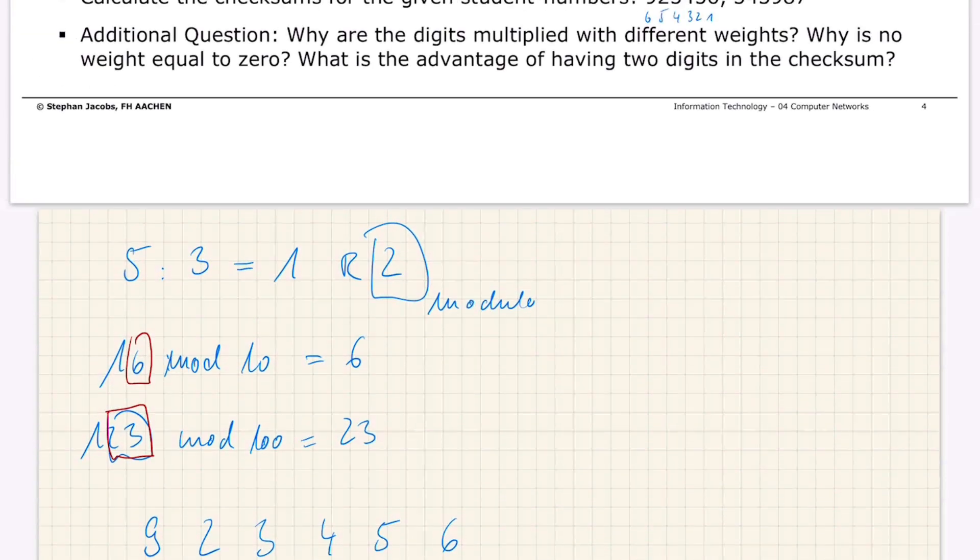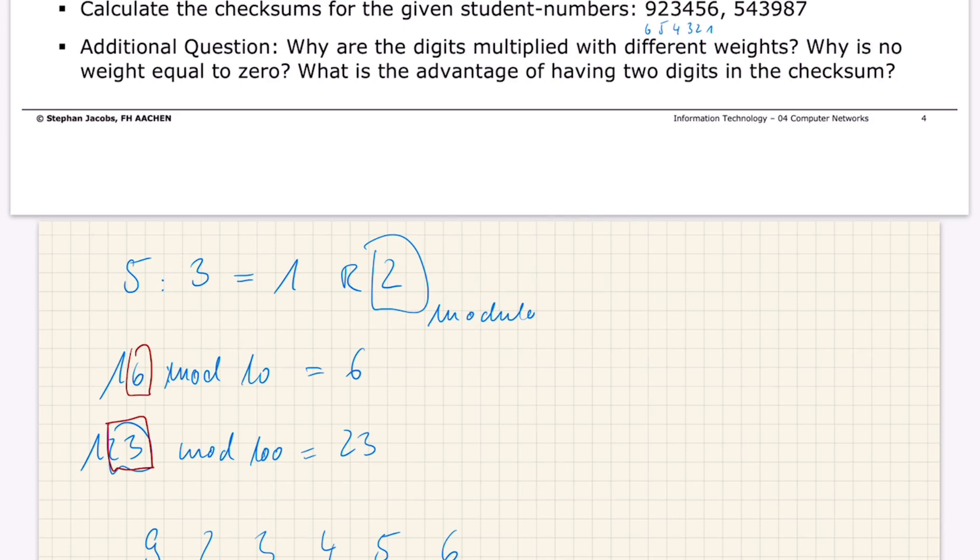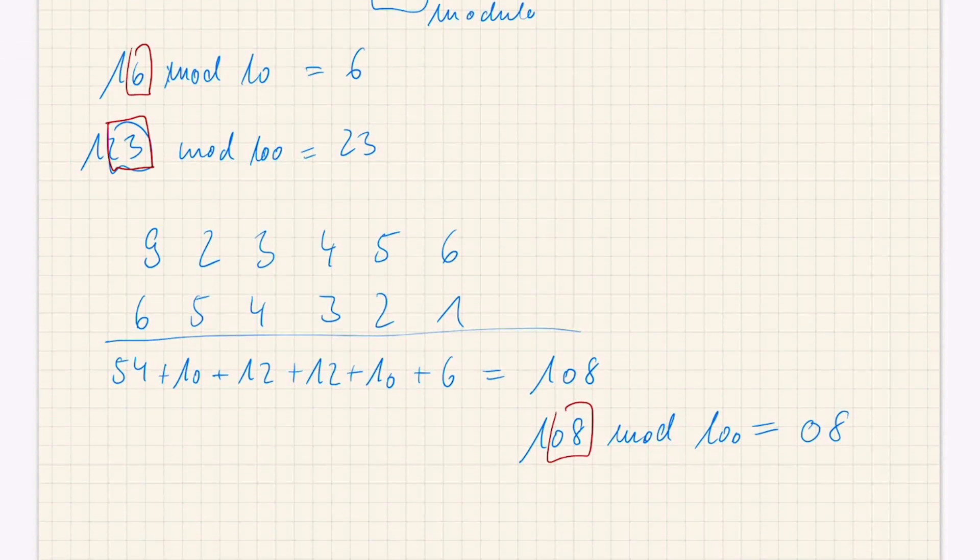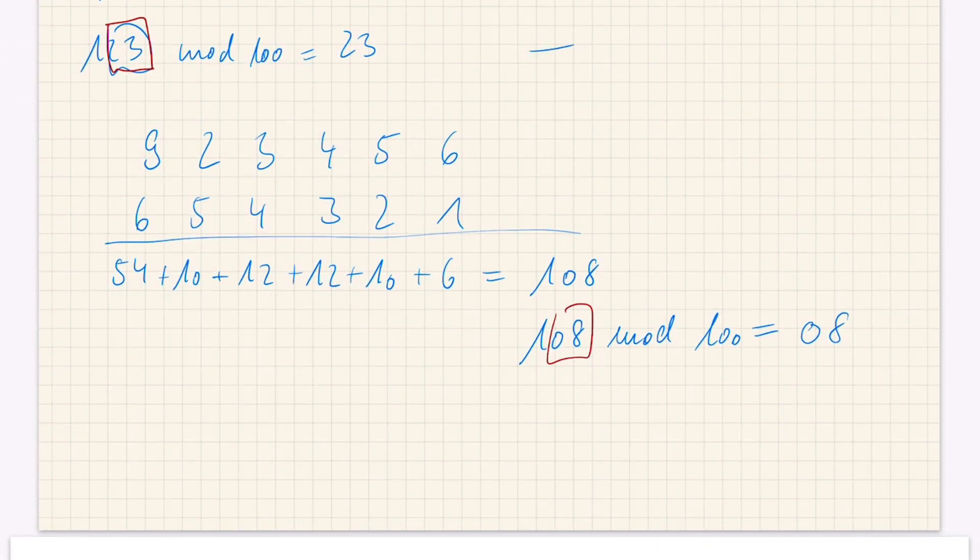And again we focus on the last two digits and the result is 08. And if you look, we have to put the last two digits behind these 923456. So the complete student number here would be 923456, and we add these 08 at the very end.